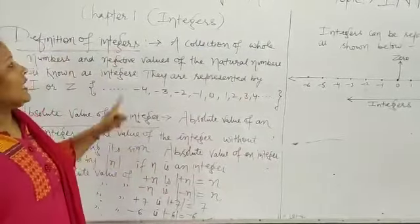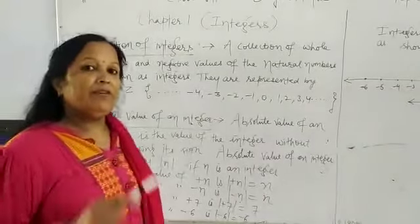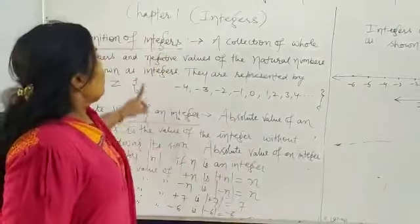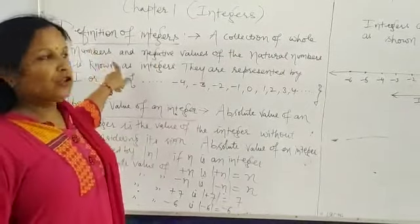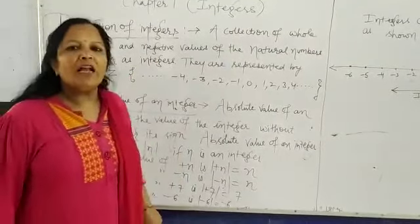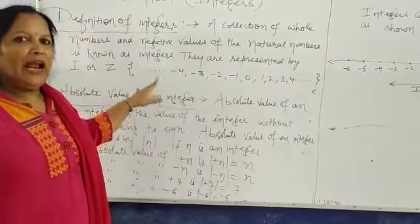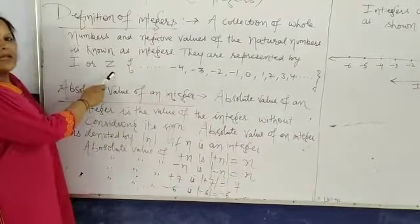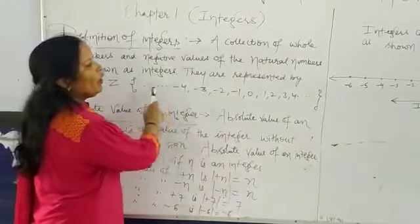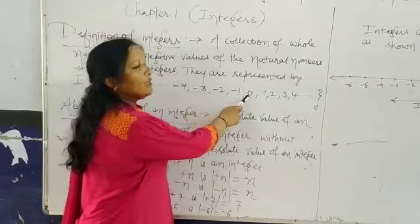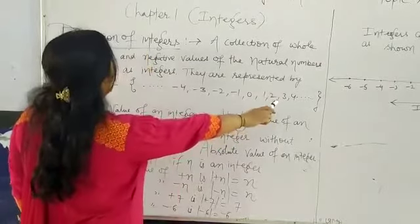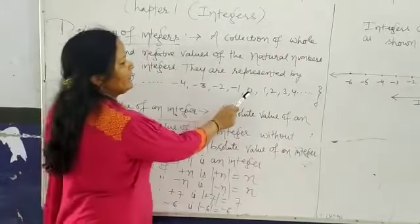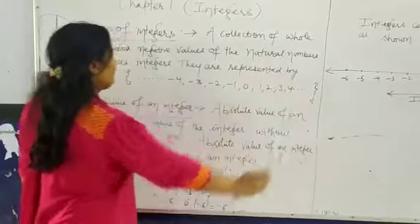What are integers? A collection of whole numbers — which includes 0, 1, 2, 3, and all numbers up to infinity — and the negative values of the natural numbers is known as integers. Integers are always denoted by the capital letter I or capital Z. This is a set of all the negative values of natural numbers and all the positive values of whole numbers, from 0, 1, 2, 3, 4 up to infinite numbers.